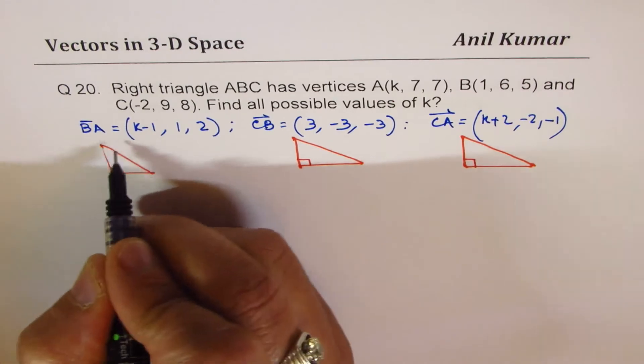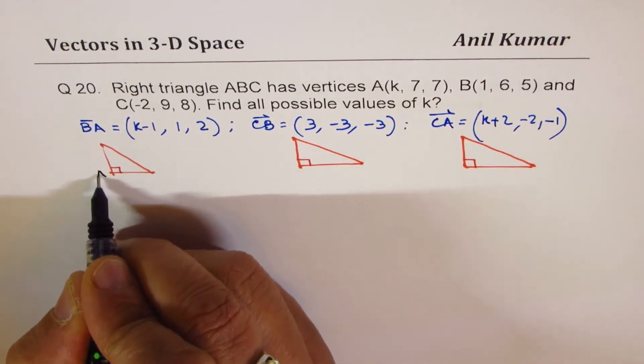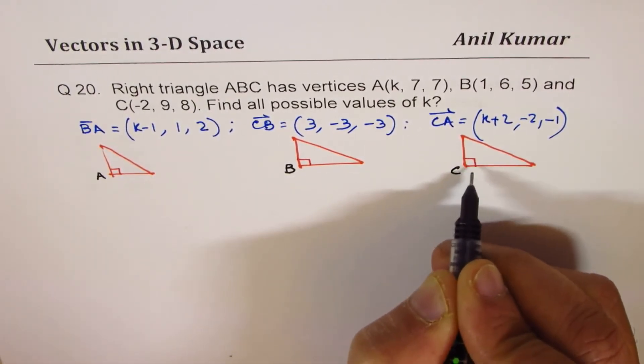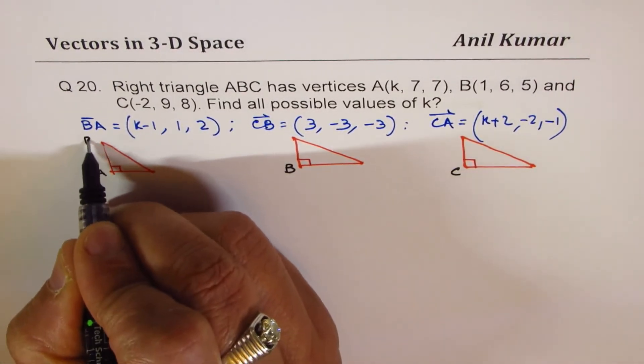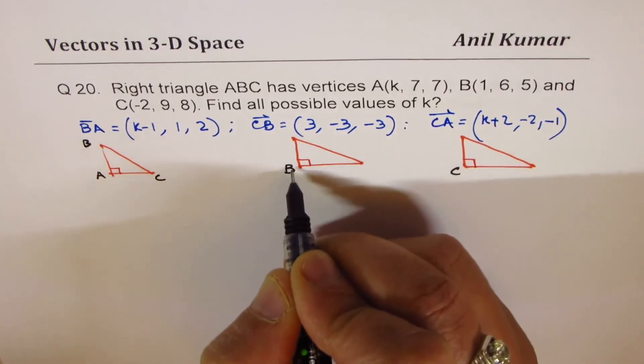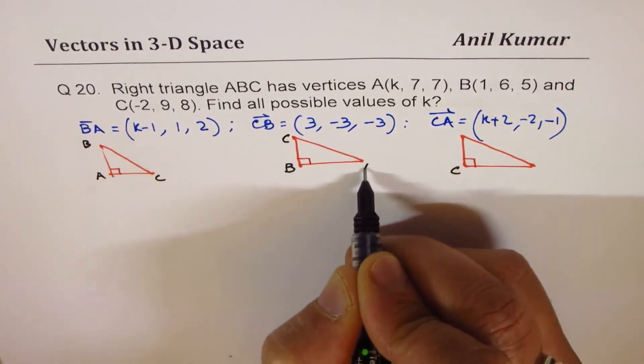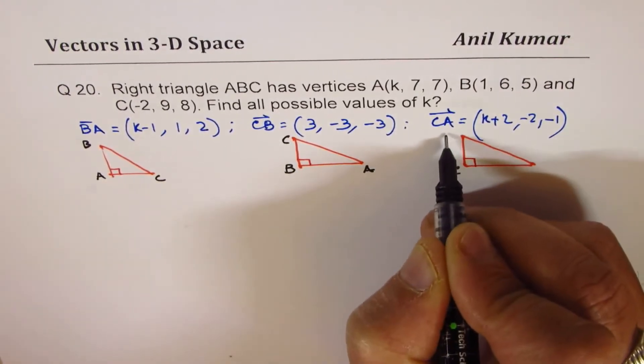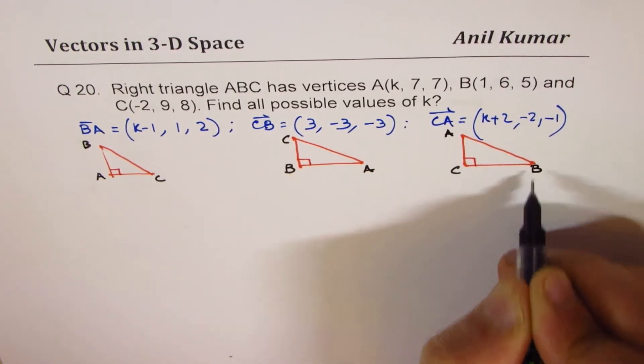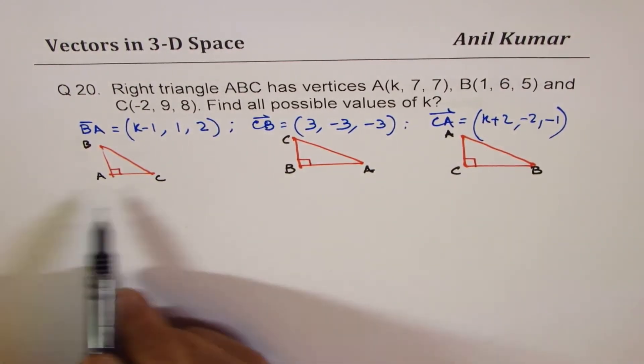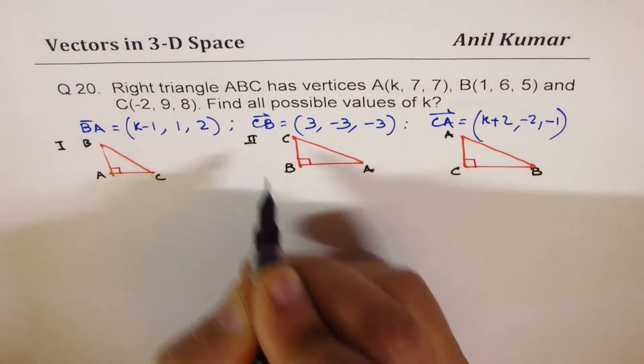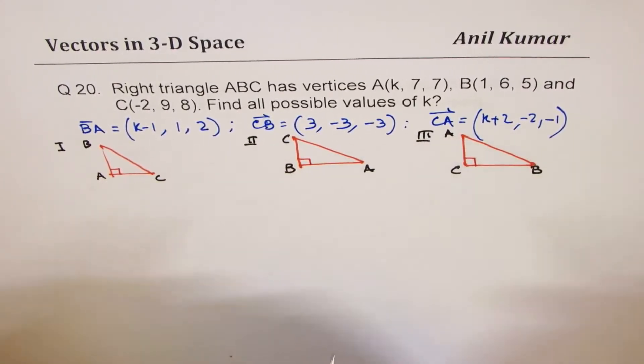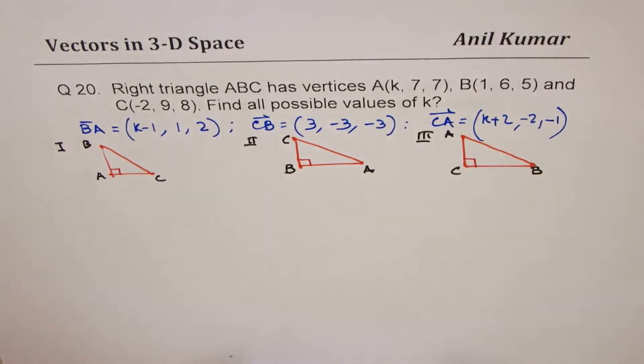So we can say this is A, this is B, or this is C which is at right angles, and accordingly we can actually call other sides. So just write them as A, B, C. Does it make sense to you? So basically we have three different cases to work with and each case will result into different value of K.